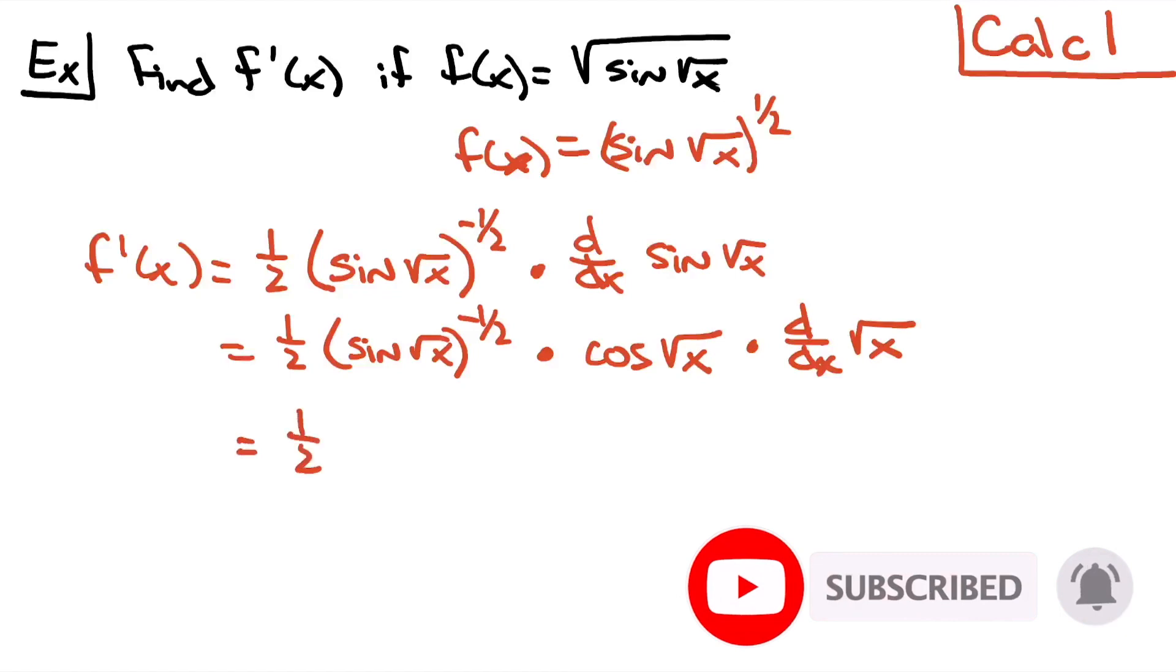I'm going to have a 1 half times sine square root of x raised to the negative 1 half, and then times cosine square root of x.